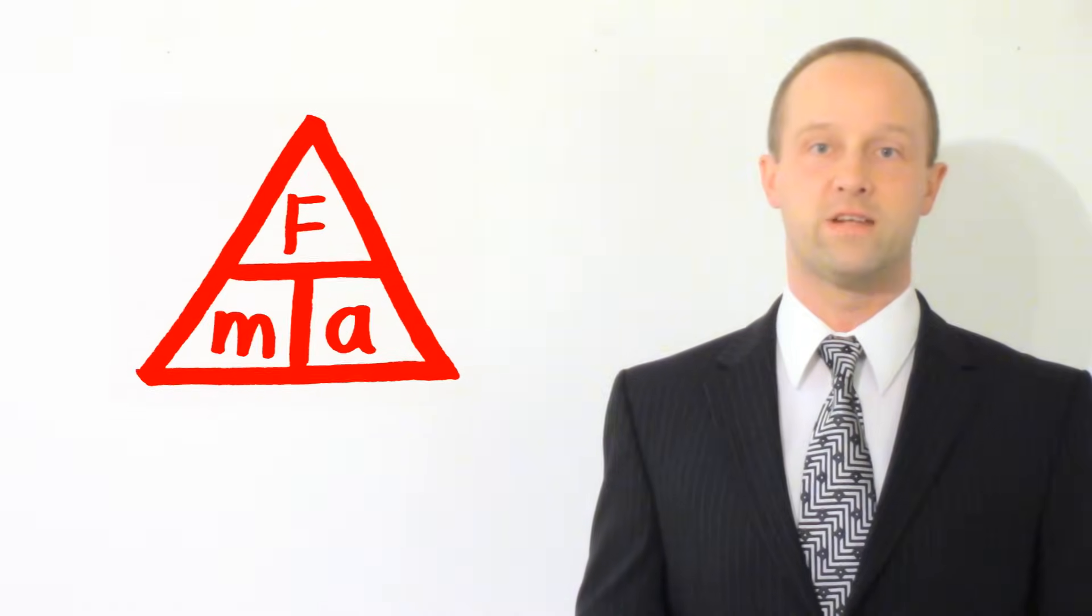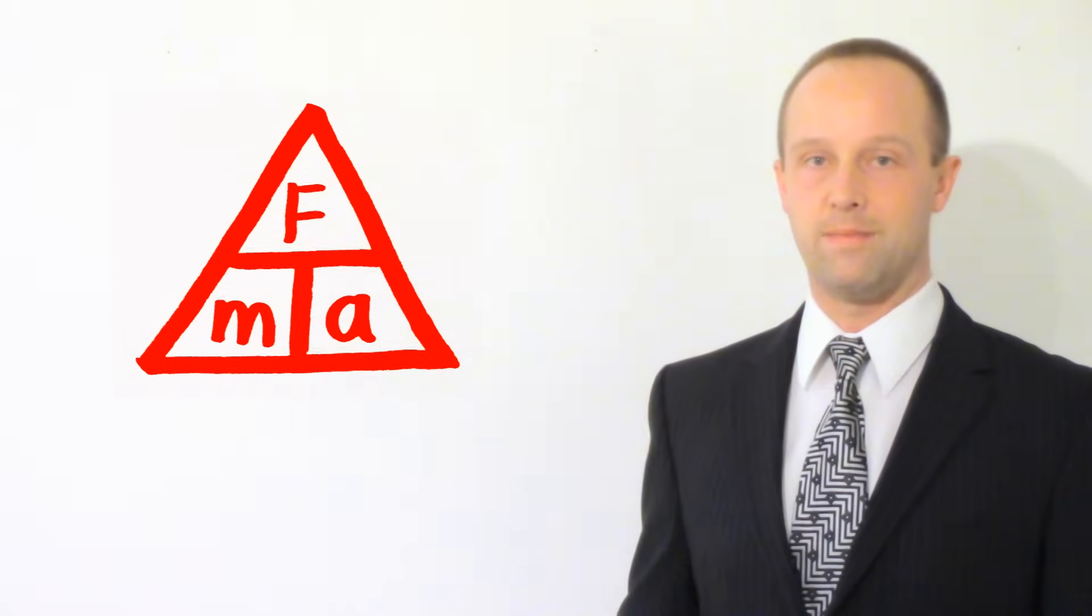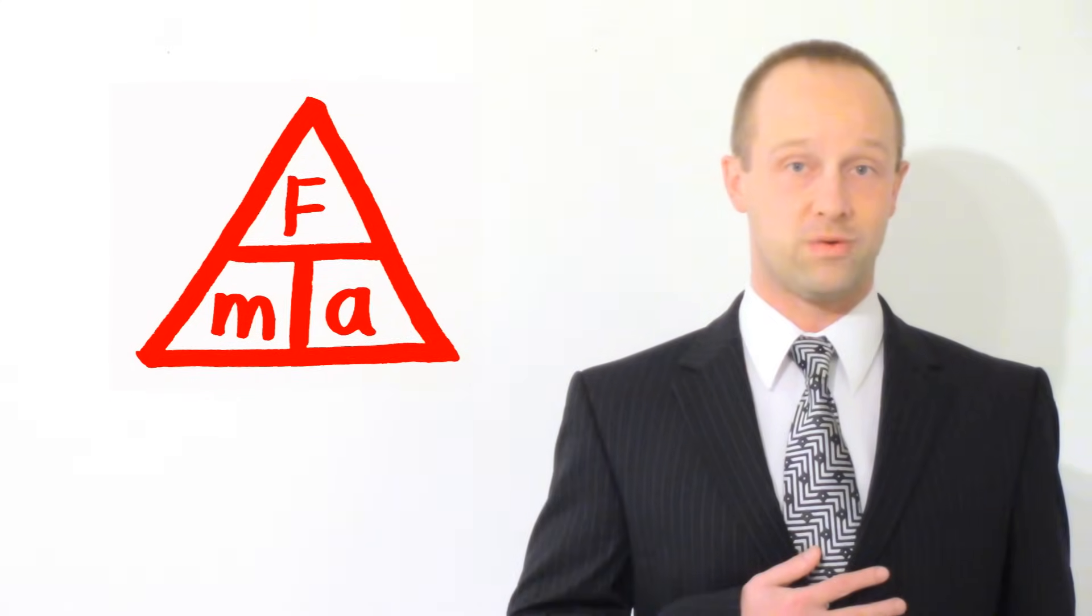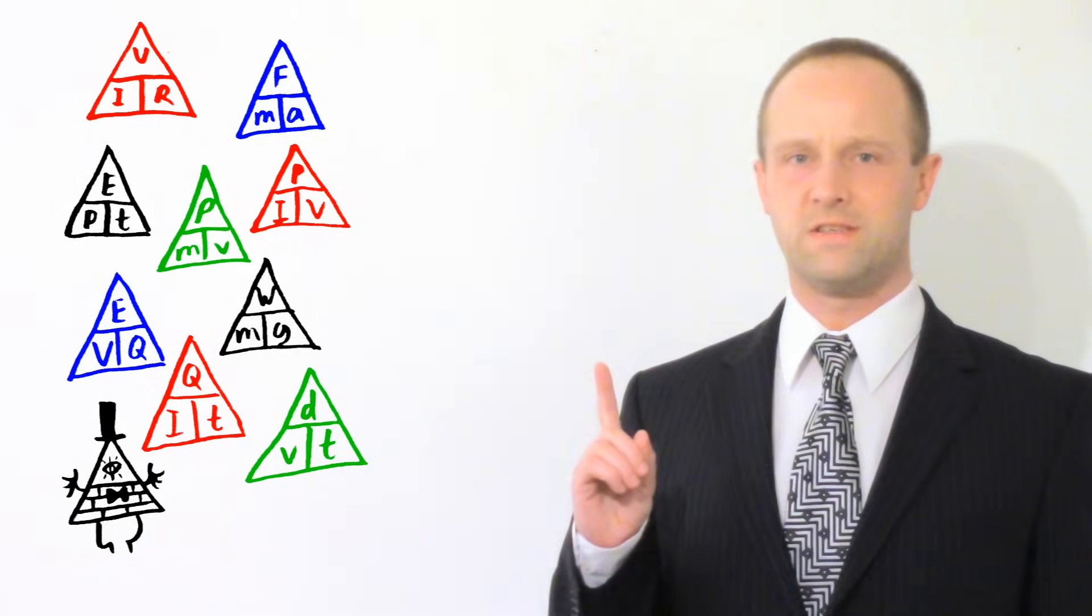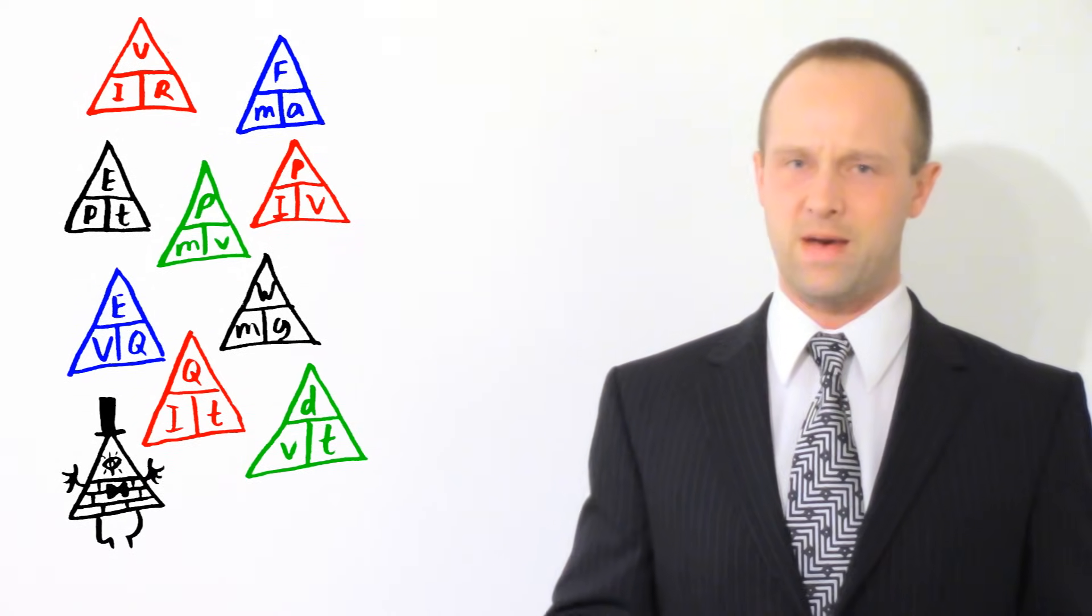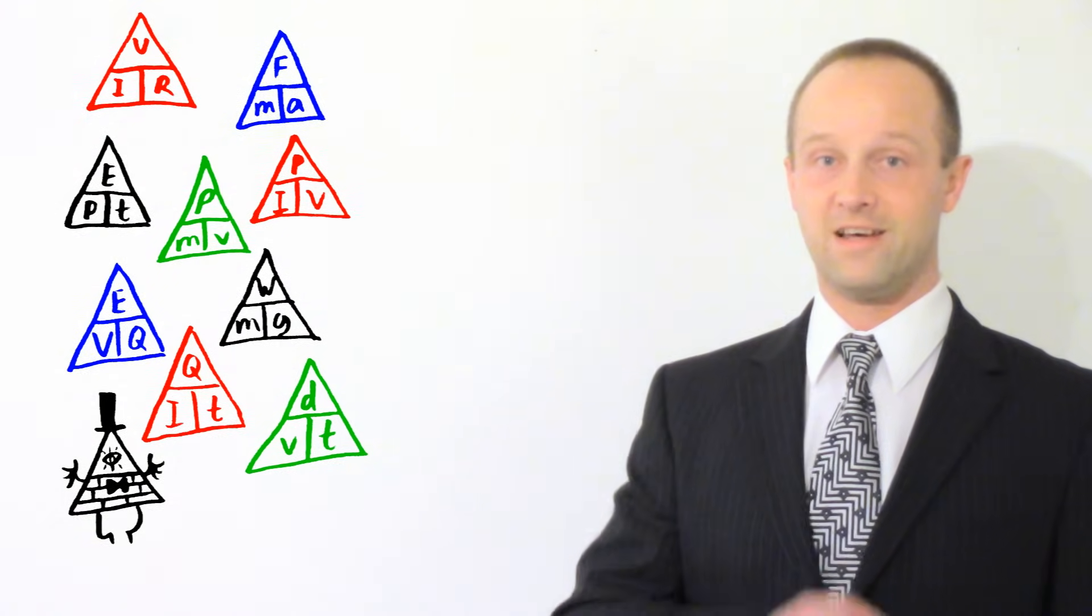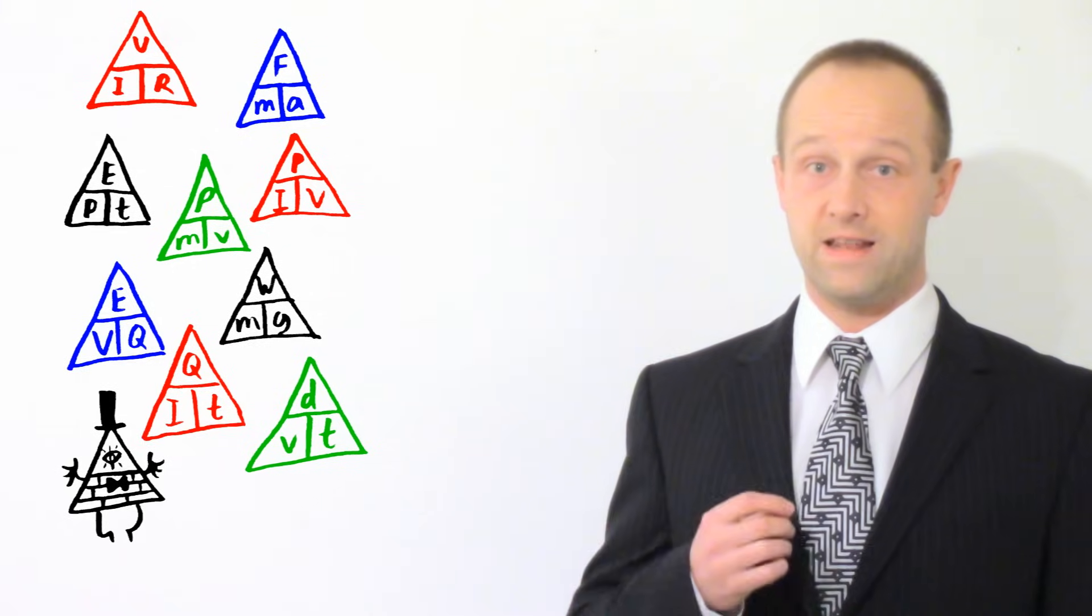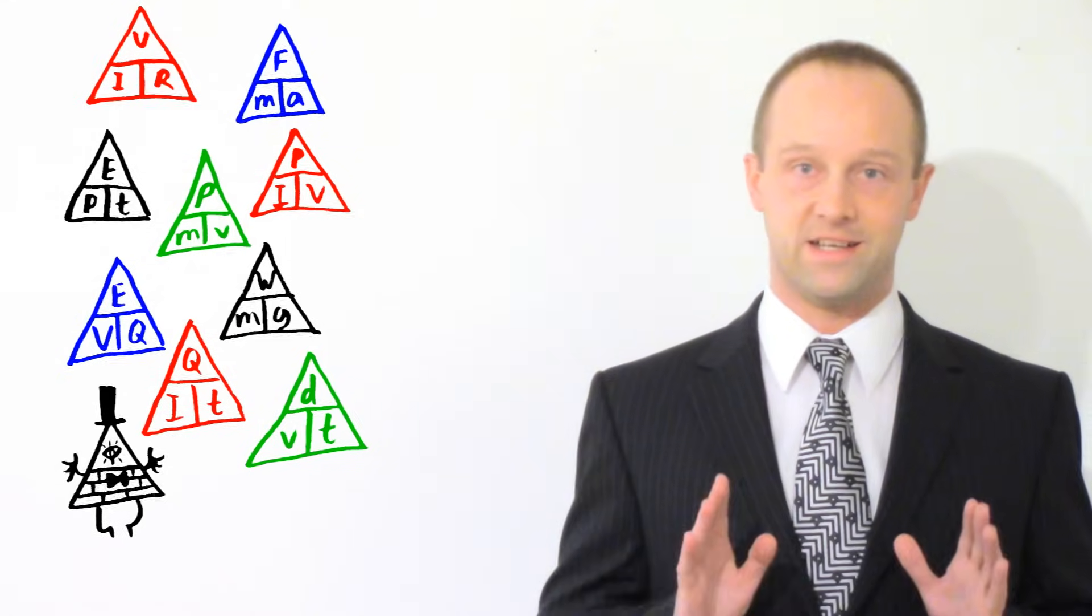Now maybe your teachers have tried to get you to learn how to do this using something like a triangle. So for the equation F equals M times A, you might use this triangle with F up at the top and M and A underneath. Personally, when I was your age, I absolutely hated all of these triangles. Way easier to learn how to use the formulas in the form that you've given them.